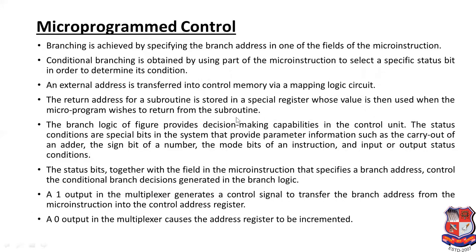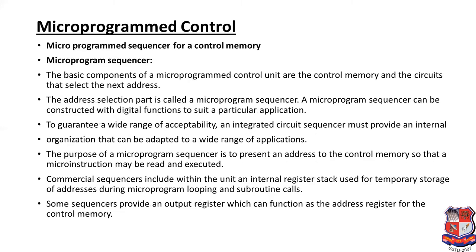When the branch logic output is one, the multiplexer generates a control signal to transfer the branch address from the micro instruction into the control address register. When the multiplexer output is zero, the address register is incremented. So, if the multiplexer output is 0, the address register increments; if the multiplexer output is 1, the branch address is transferred to the control address register. The multiplexer knows whether to use branch logic, mapping logic, or to increment the address — these are the four tasks of the micro program sequencer for control memory.